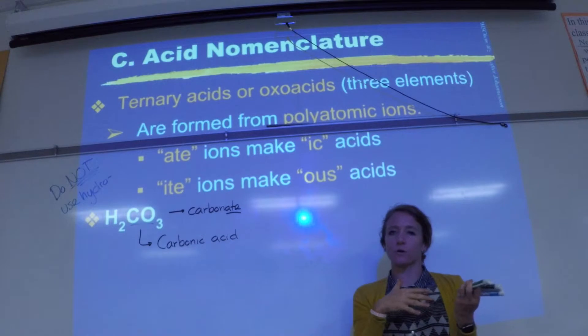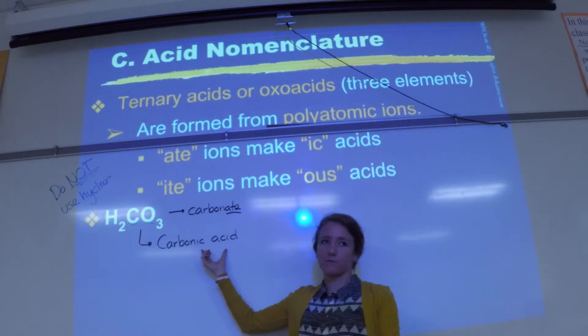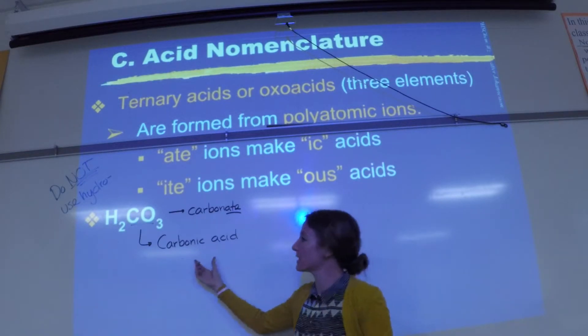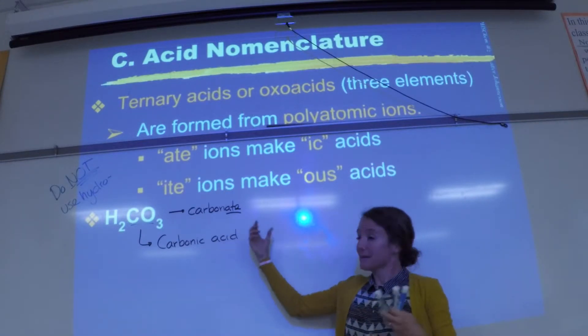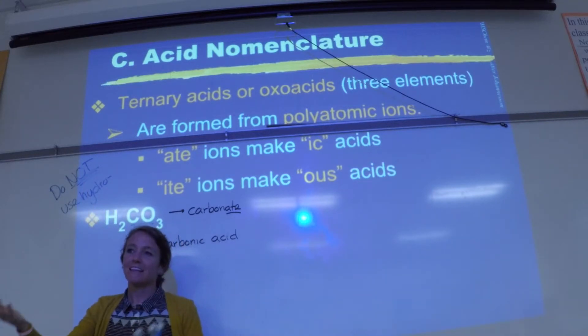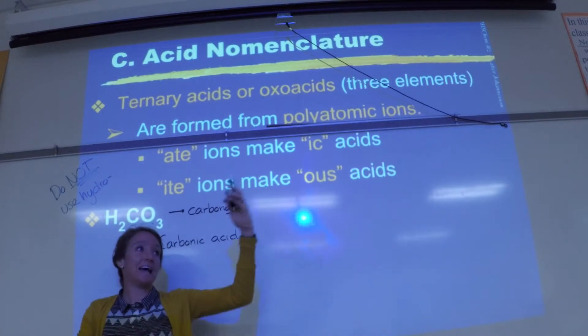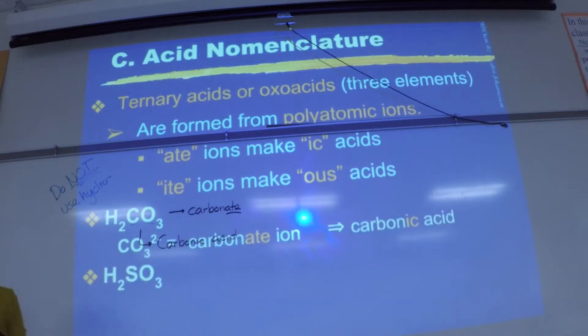Now let's just kind of reverse this real quick. Carbonic acid doesn't say hydro in front, but how would I know that it has hydrogens in its formula? Because it's an acid, right? We don't need to use hydro to tell us there's hydrogens. The hydro is to distinguish between an element and a polyatomic. Okay let's do one more together. So find, let's see, our next one is H2SO3. So find SO3 on your chart. So its name is sulfite.